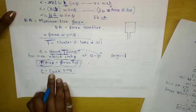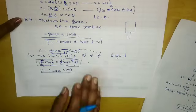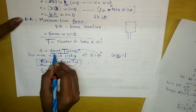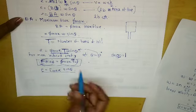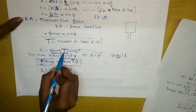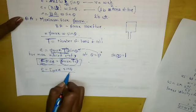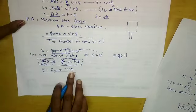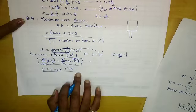So E = Emax·sinθ is the equation of alternating EMF. From this equation we understand that as the angle theta changes, EMF varies according to the sine of angle theta. This is the equation of alternating EMF, and it can also be written as E = Emax·sin(ωt).